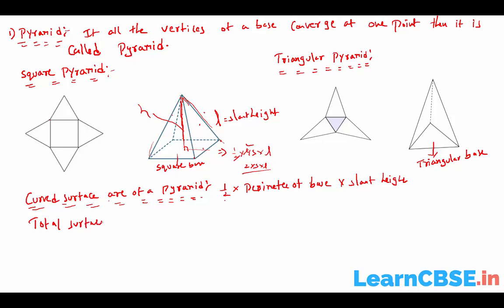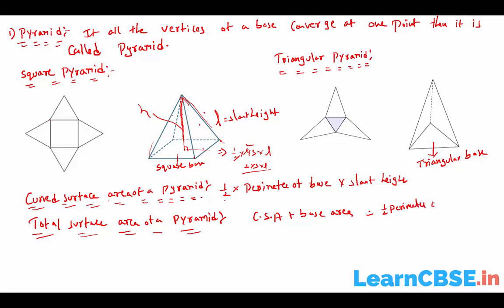The total surface area of the pyramid is curved surface area plus base area. In curved surface area we excluded the base; total surface area means we include the entire figure. So total surface area equals ½ × perimeter of base × slant height, plus the area of the base.